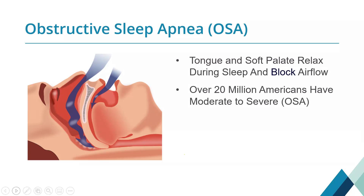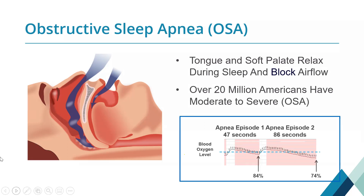It's very common. Over 20 million Americans have at least moderate to severe sleep apnea, and a lot of these cases are undiagnosed. You can see on the lower right portion of the slide where apneas — that cessation of airflow — affects your blood oxygen level, going down to 84% the first time, with the apnea lasting 46 to 47 seconds, and essentially a repeat of the same event, that time a little bit more severe.